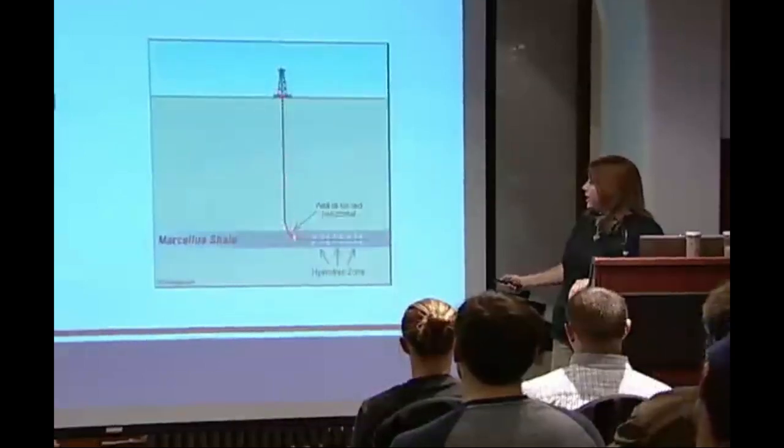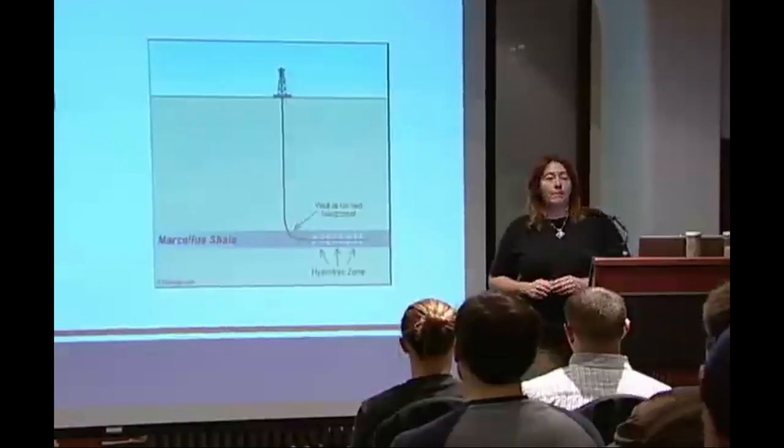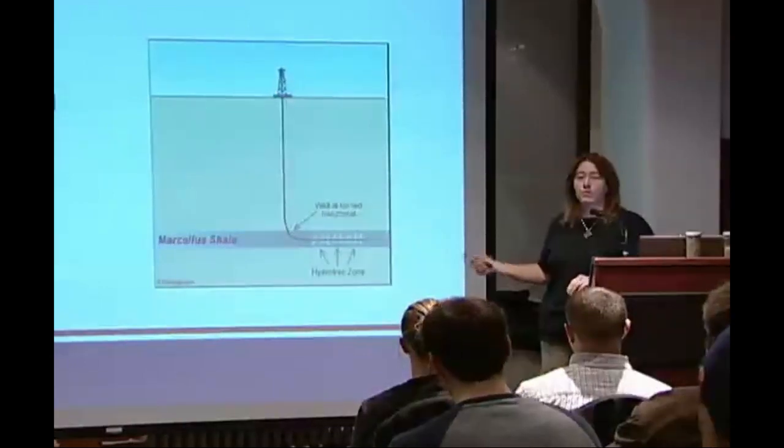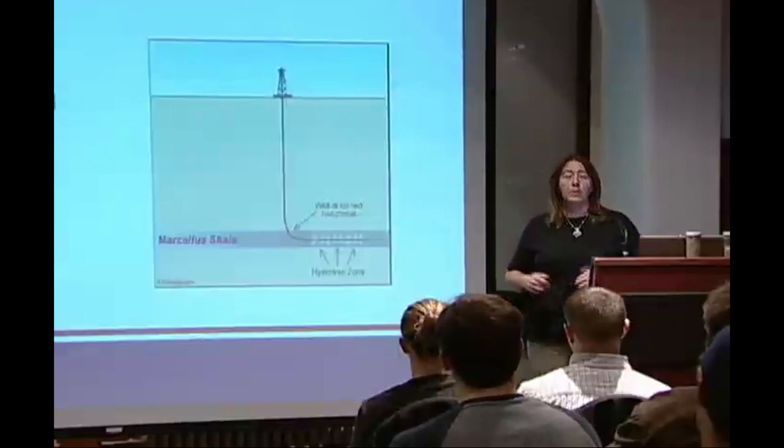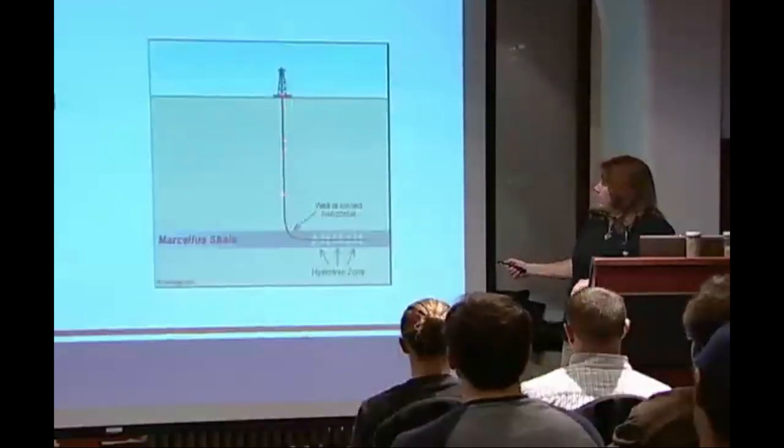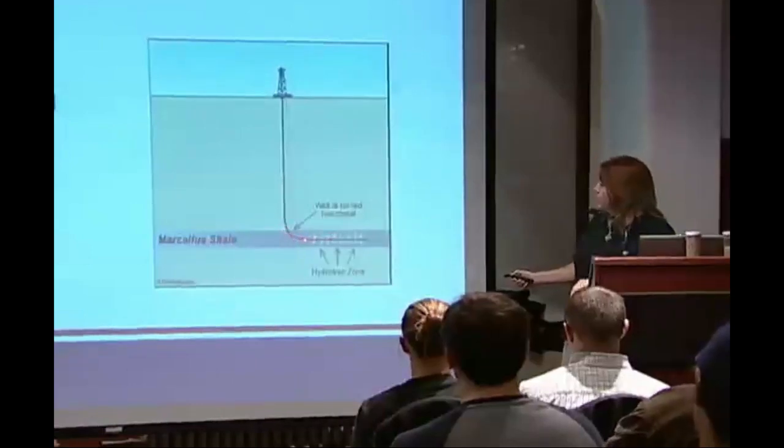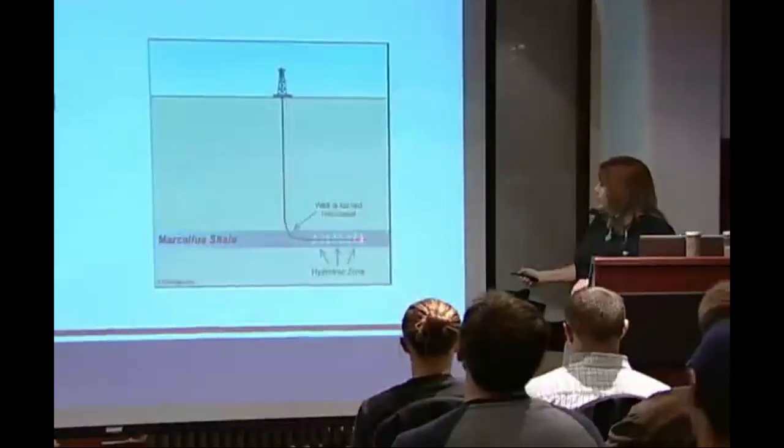This is about 6,000 to 8,000 feet below the surface, and typically it takes about a half mile for them to turn completely from vertical to horizontal, so you need a lot of space in order to do this. So it goes down, straight down, and then it starts to turn. It takes about a half mile from here to here to go from completely vertical to completely horizontal, and then they keep drilling through the rock for a set distance.